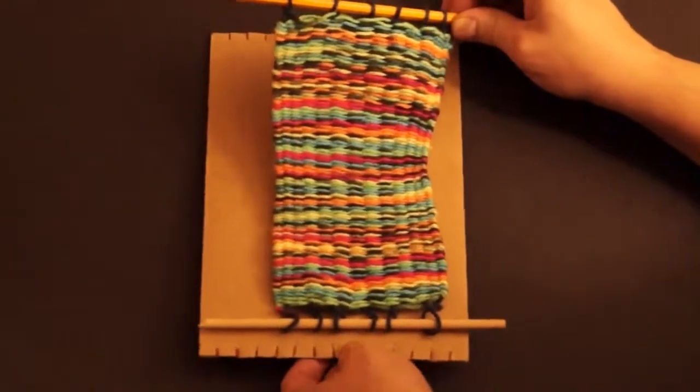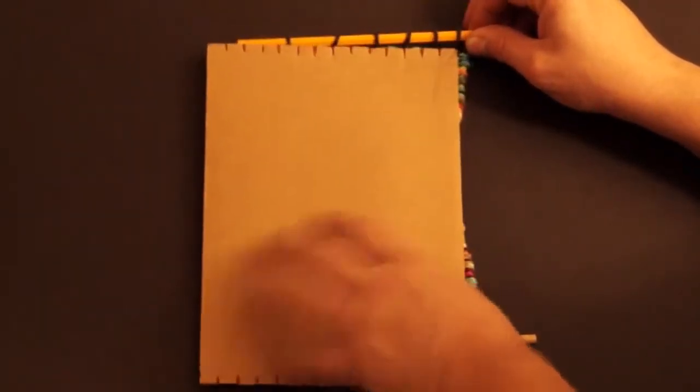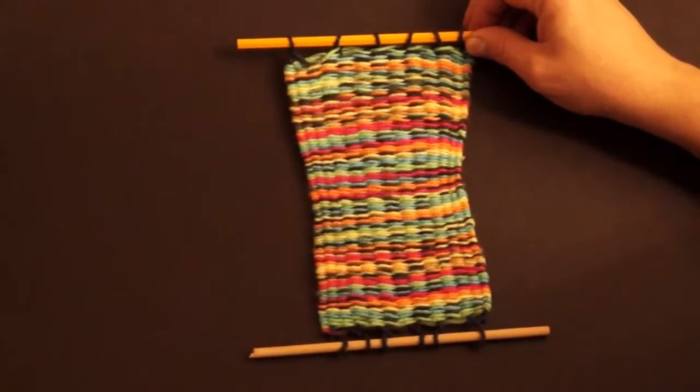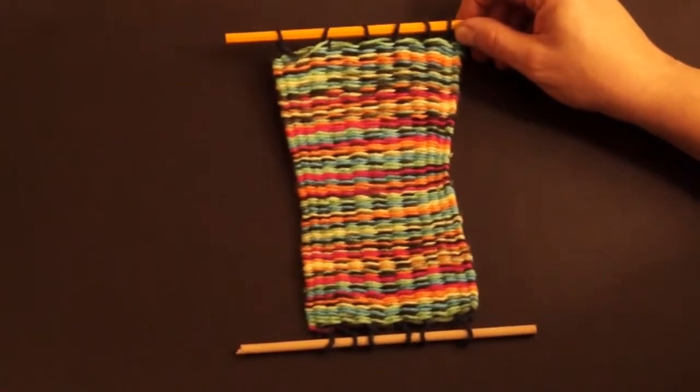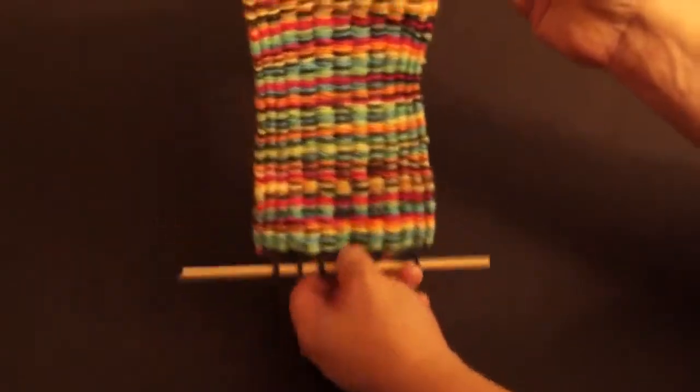I've taken it off of the loom. And again, like I said, if you've taken care of your loom here and not roughed it up too bad, you could use this to make more weavings. Reuse that. And then here's what it looks like on the pencil and on the dowel rod.